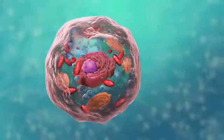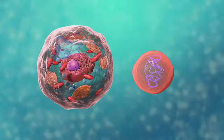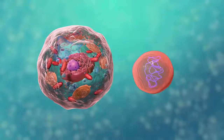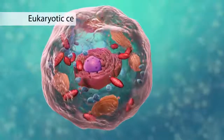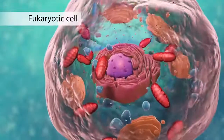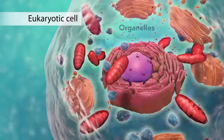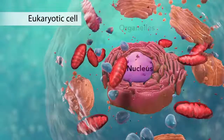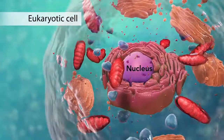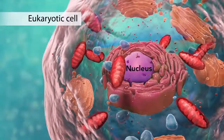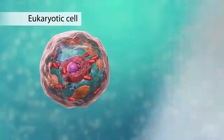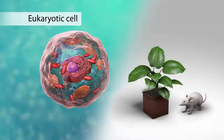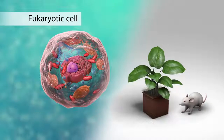There are two broad categories of cells. The first category is eukaryotic cells. They have organelles, which include the nucleus and other special parts. Eukaryotic cells are more advanced, complex cells such as those found in plants and animals.